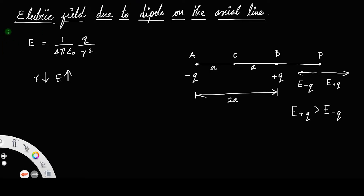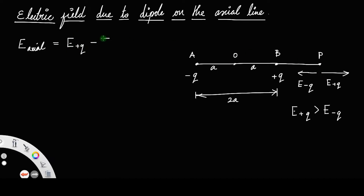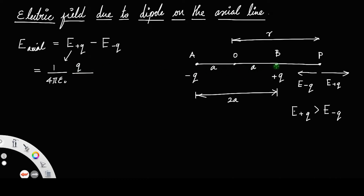The net electric field E_axial equals E_plus_q minus E_minus_q, since the two vectors are in opposite directions and E_plus_q is greater. Let the distance from center O to point P be r. Then E_plus_q equals (1/4πε₀) · q / (BP)², and E_minus_q equals (1/4πε₀) · q / (AP)², where BP is the distance from the positive charge to P, and AP is the distance from the negative charge to P.